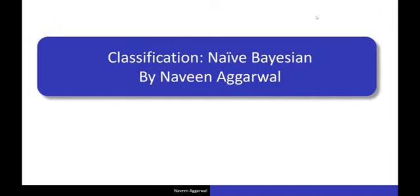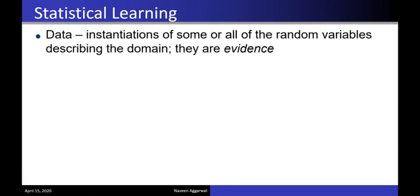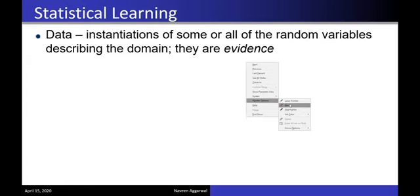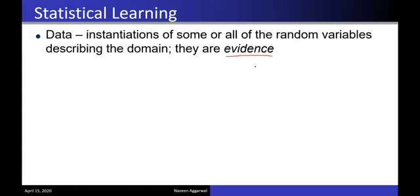Let's start today's session on classification by the Naive Bayesian algorithm. Naive Bayesian is one of the important algorithms and uses statistical learning. Statistical learning is built upon mathematical probability theory, and we treat the data as examples taken using random variables which describe the domain. We call these examples the evidences. Today's lecture will cover various terminologies specific to Naive Bayesian and statistical learning.